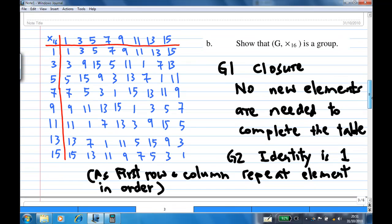Next, we're going to verify that this is a group. Now, to verify that G is a group, there are 4 axioms. First one is closure. Notice that no new elements are needed to complete the table. So this group is closed.